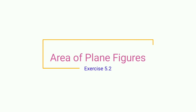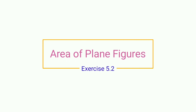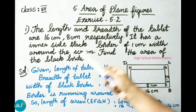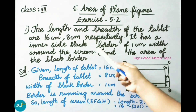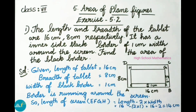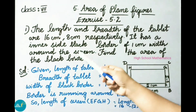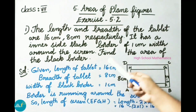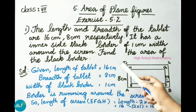Hello everyone, welcome to High School Mathematics channel. Today we are going to learn class 7 sem 2 chapter 5, area of plane figures, exercise 5.2. Question number one: the length and breadth of the tablet are 16 centimeter and 8 centimeter respectively. It has an inner side black border of 1 centimeter width around the screen.